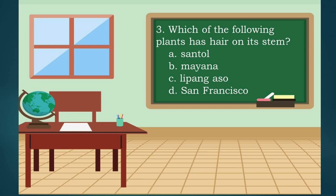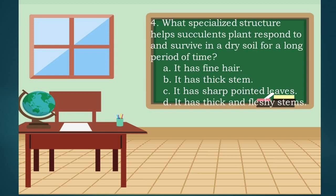Question 3: Which of the following plants has hair on its stem? A. Santol, B. Mayana, C. Lipang aso, D. San Francisco. If your answer is C, then you are correct.